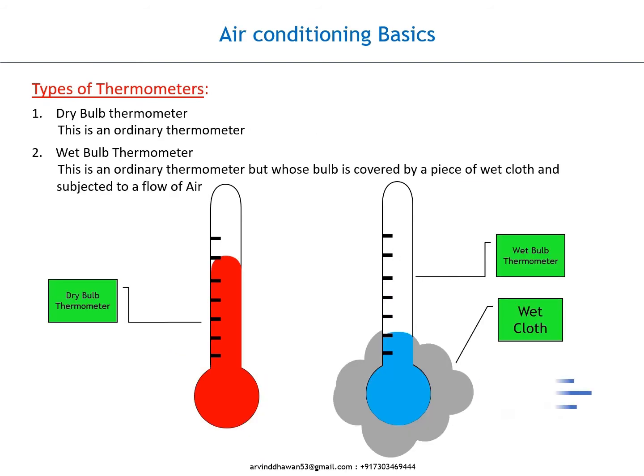Types of thermometers: 1. Dry bulb thermometer — this is an ordinary thermometer. 2. Wet bulb thermometer — this is also an ordinary thermometer but whose bulb is covered by a piece of wet cloth and subjected to a flow of air.